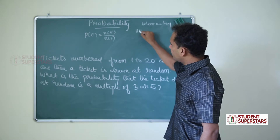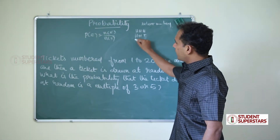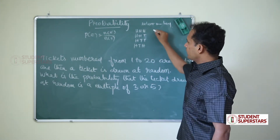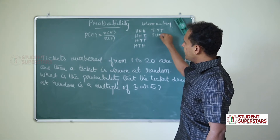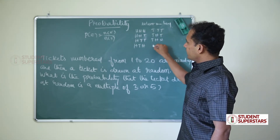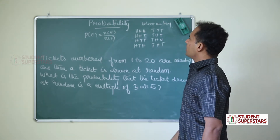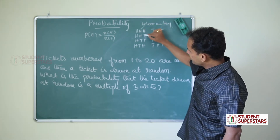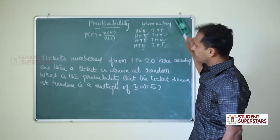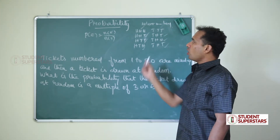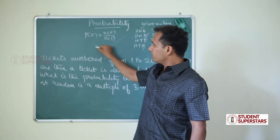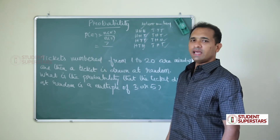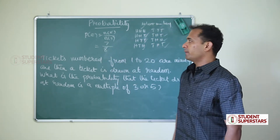When we toss three coins, the possible outcomes include: head-head-head, head-head-tail, head-tail-tail, head-tail-head-tail, and so on. For at least one head, except the triple tail case, all other possibilities count. So the number of events is 7 out of 8 total samples. The probability is 7 by 8.